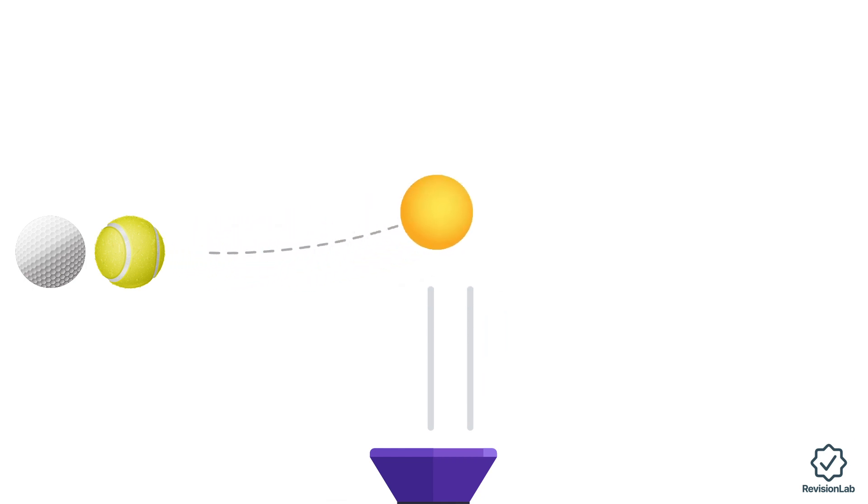If the lightest ball passes in front of the hairdryer it undergoes a large deflection because of its low density. A tennis ball of the same size will also be deflected, but less than the table tennis ball because of its greater density. Lastly the golf ball will be deflected least because it has the greatest density.